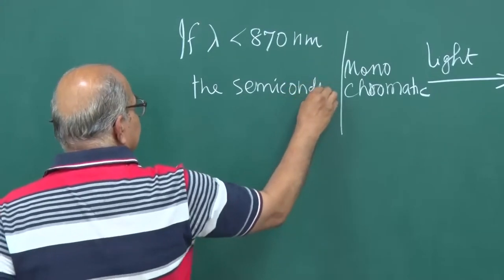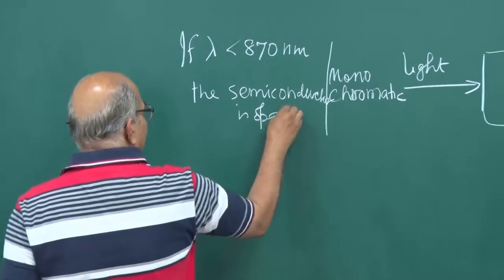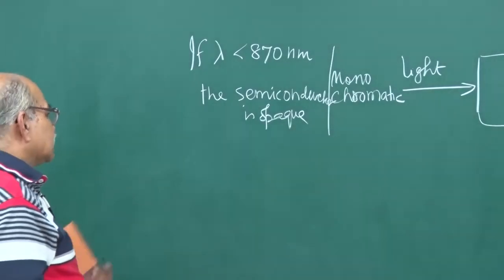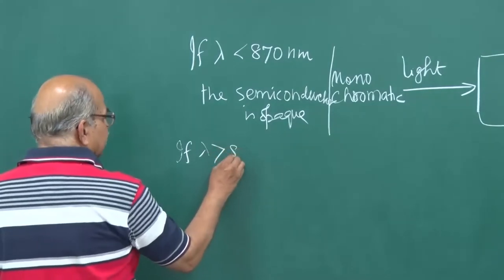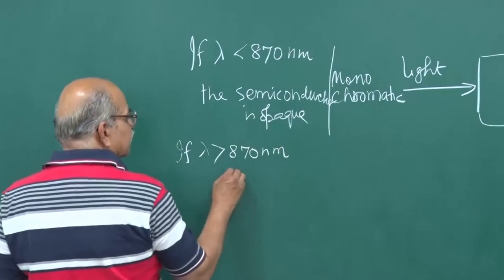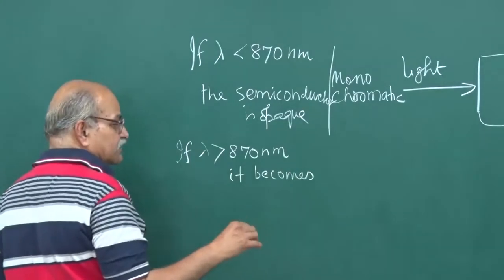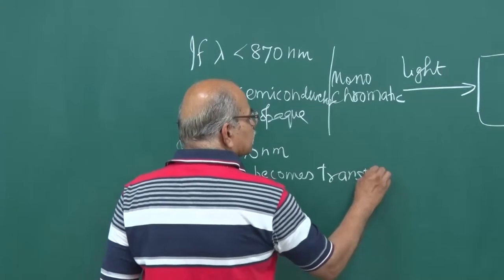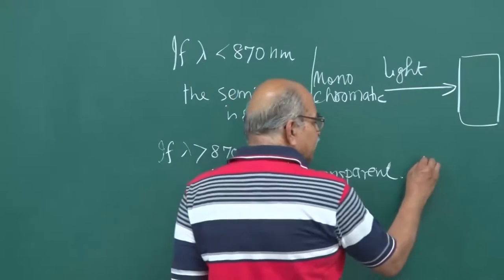The semiconductor is opaque, but if lambda is more than 870 nanometers, it becomes transparent — meaning the absorption is very small. And the question is: what is the band gap?